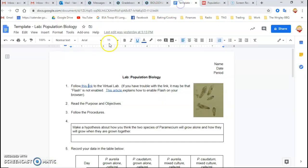And here it is. You're going to read the purpose and objectives, and then follow the procedures. First thing you have to do is make a hypothesis about how you think the two species of paramecium will grow alone, and how they will grow when they are grown together.